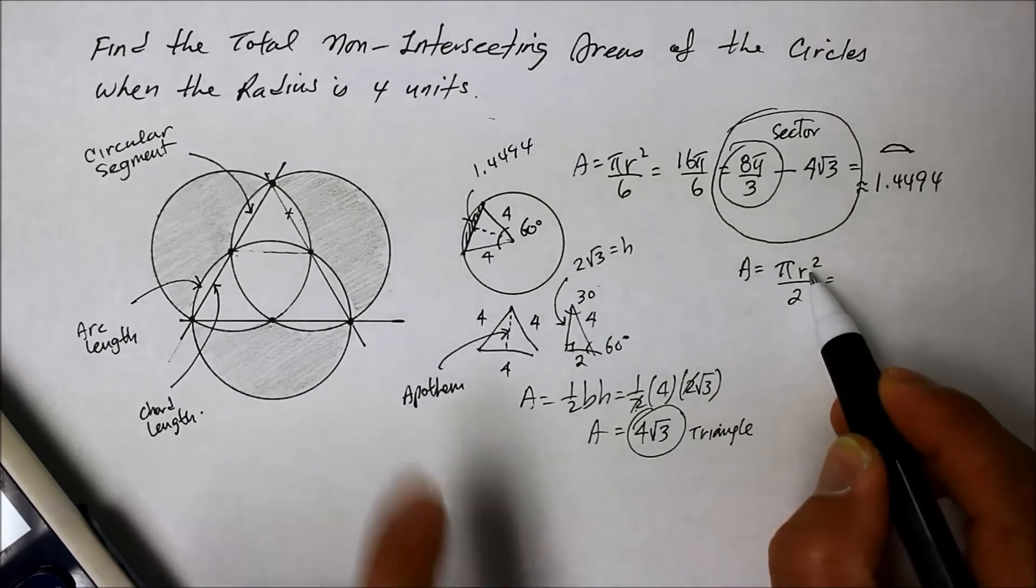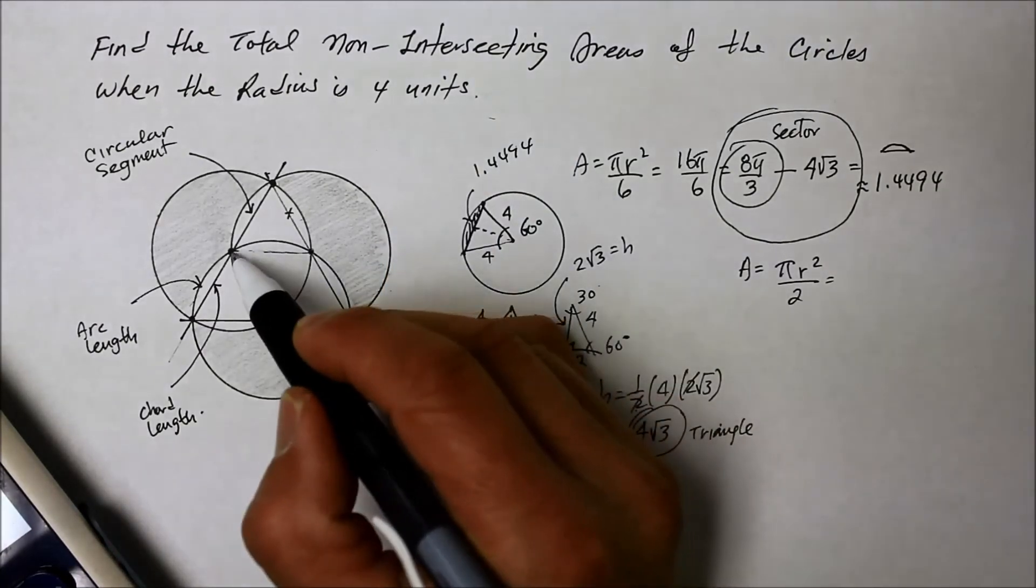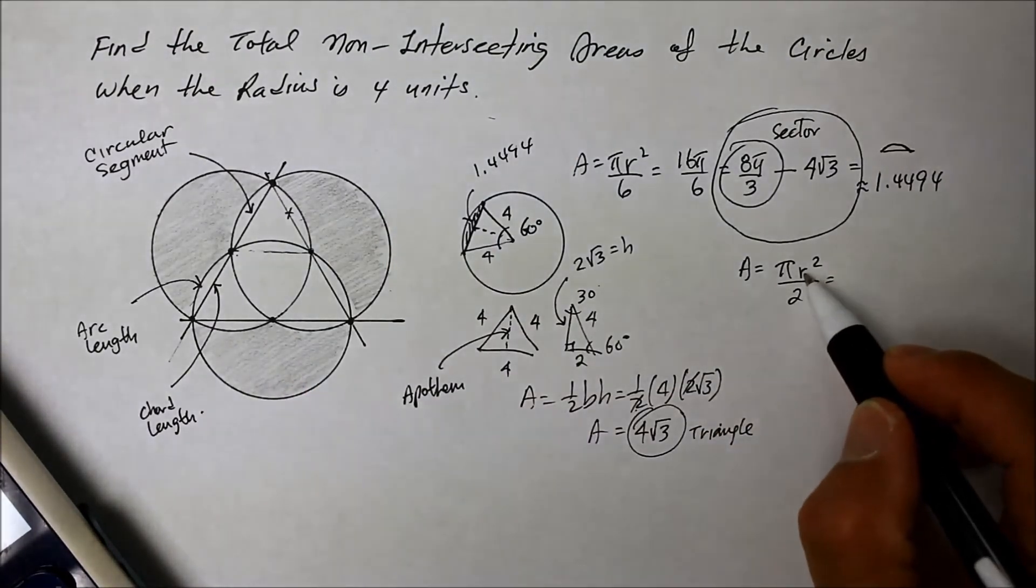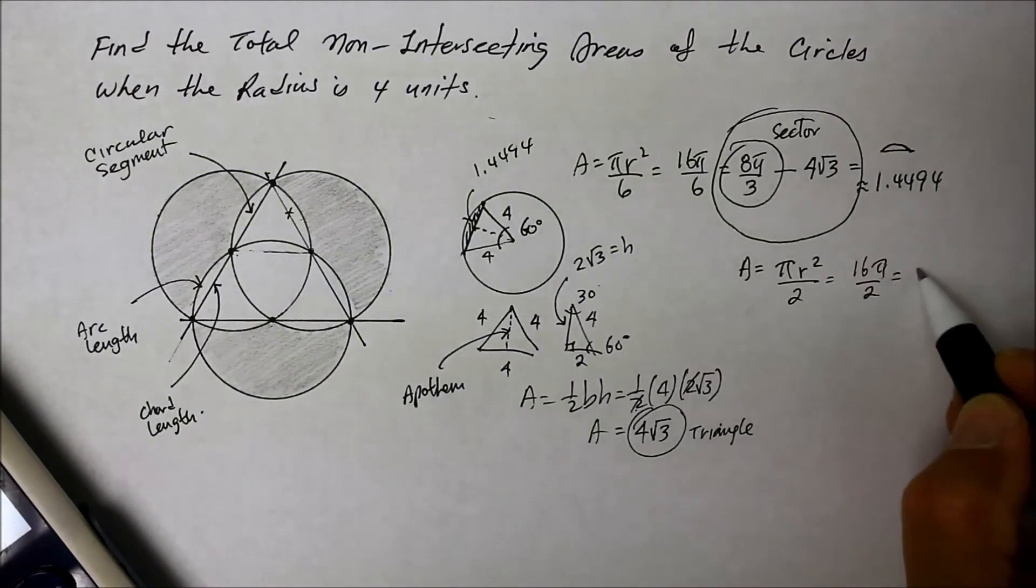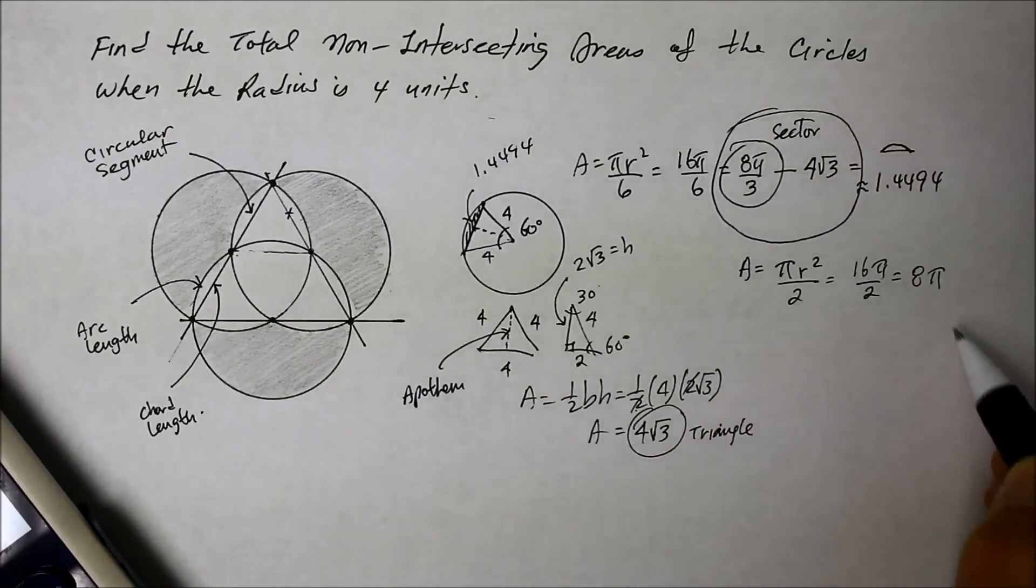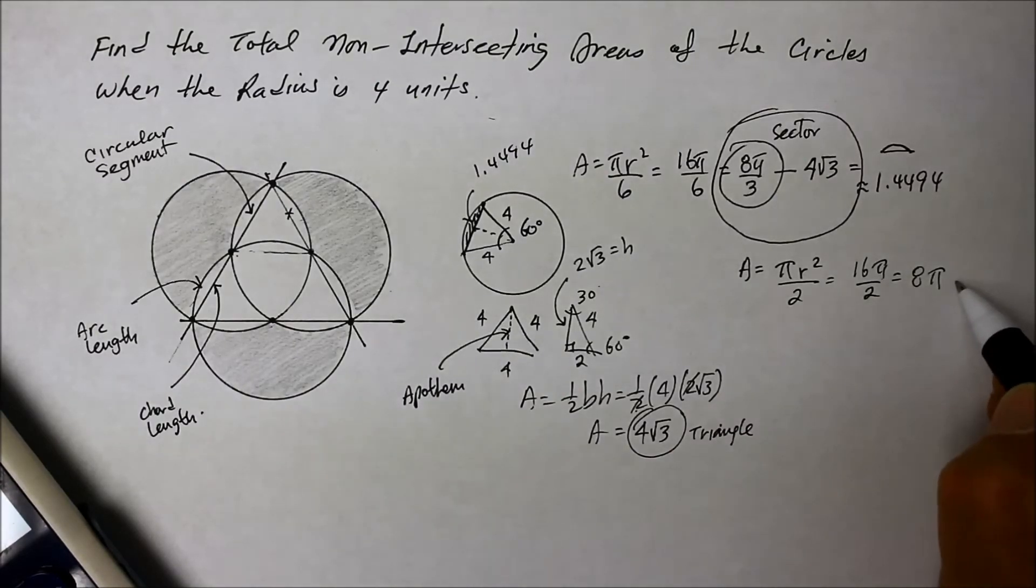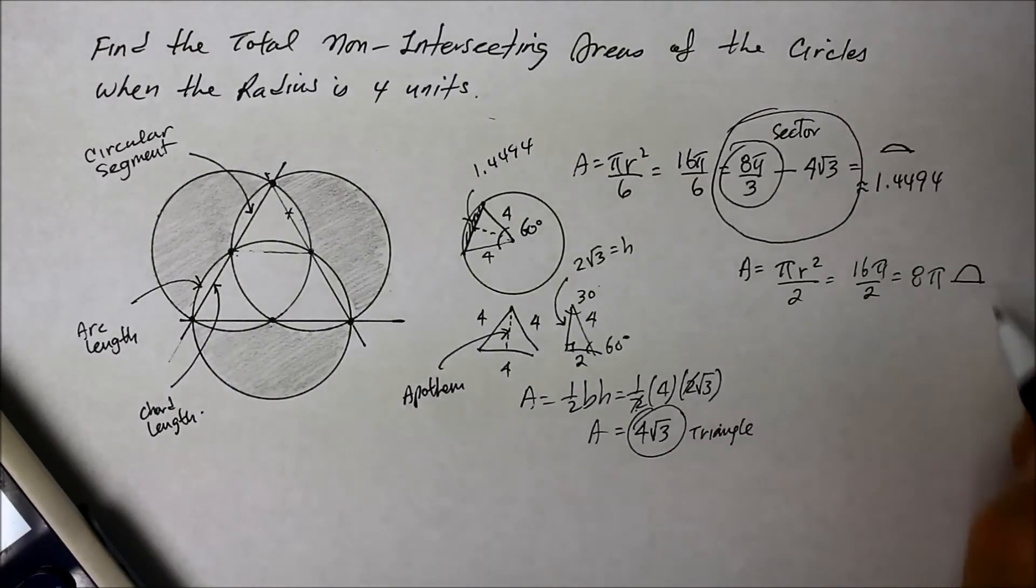The radius, again, is 4 units, from here to there. So that's 16. So 16 pi over 2, and that's 8 pi. Okay? That's for this right there. Okay? That's for the semi-circle.